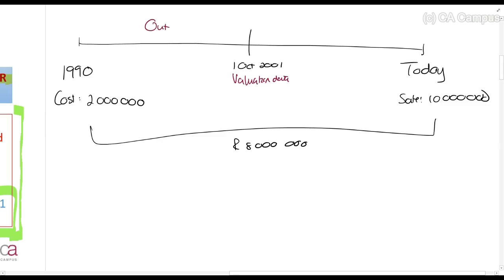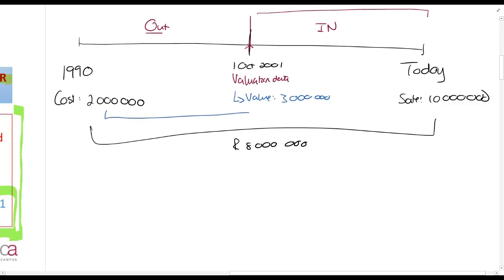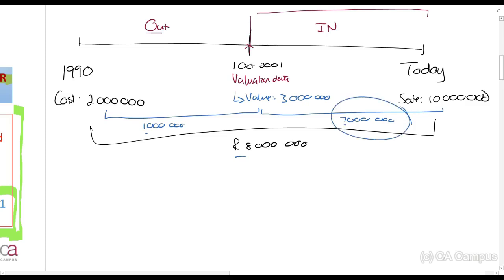Before 1 October 2001, everything was outside the CGT net because there was no CGT at that point in time. After 1 October 2001, we have things in the CGT net. Usually we'll have a disposal here, but because CGT only started on that date, the rule was not in place yet. So basically all they said is: we can only tax you on this period. Let's say the valuation date value on 1 October 2001 was 3 million rands. Then from 1990 to October 2001 there was a 1 million rand gain, and from 1 October 2001 until today there was a 7 million rand gain — 1 million plus 7 million equals 8 million in total. How much can we tax? Only 7 million.